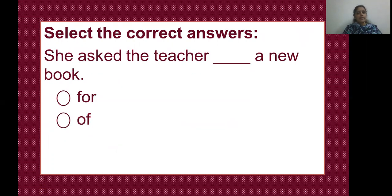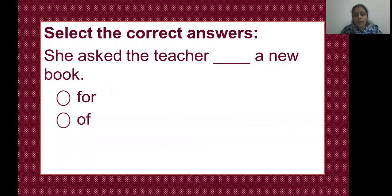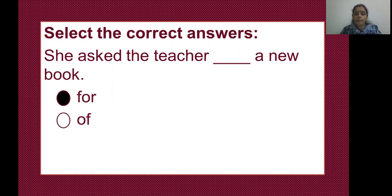Select the correct answers. 'She asked the teacher dash a new book.' The options are 'for' or 'of.' Which is the correct option? Yes — F-O-R, 'for.' She asked the teacher for a new book.